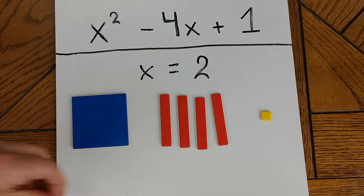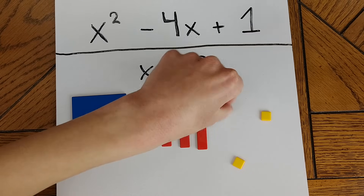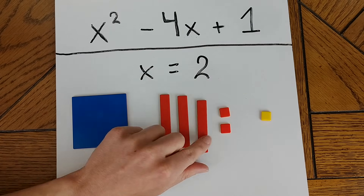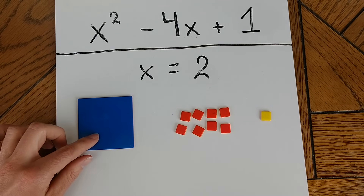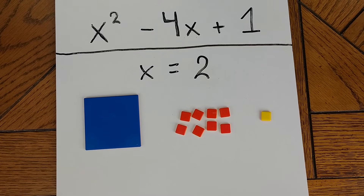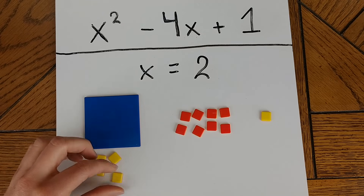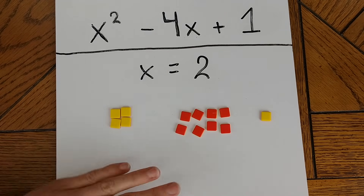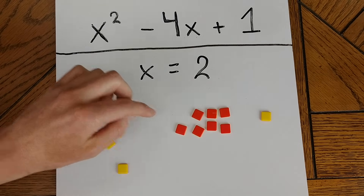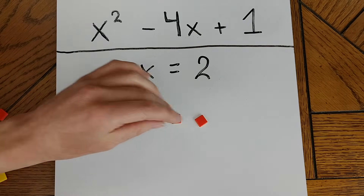For each x tile, I'm going to replace it with two unit tiles. But here's the catch: because this x tile is negative, I need to make my unit tiles negative as well — that's an important step we don't want to forget. And finally, that brings us to the x squared tile. For the x squared tile, what we're actually going to want to do is build a square that is x units wide and x units long. Because my x is 2, I'm building a 2 by 2 square. Once all my variables are gone, all that's left is to find the combined value of all these tiles by pairing up positive-negative pairs and canceling those out.